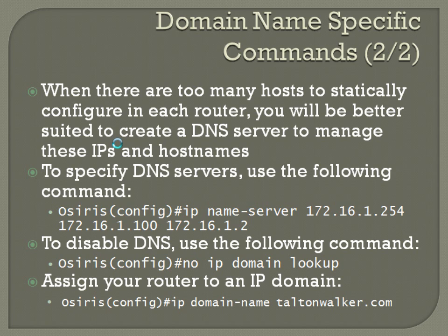At some point you're probably going to want to set up a dedicated server that has all the mappings of IPs to host names, so you don't have to worry about each of your devices managing that. To specify DNS servers, use the following command from global configuration mode: ip name-server [IP address]. You can list multiple server IPs separated by spaces — up to six.